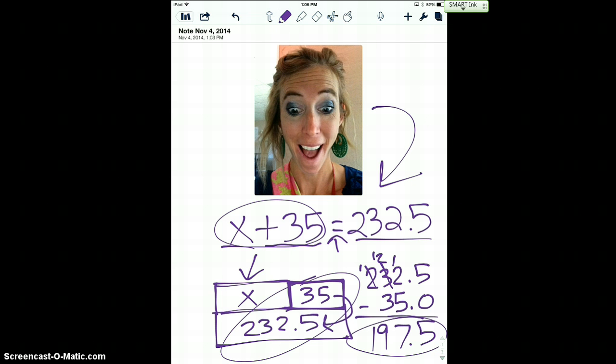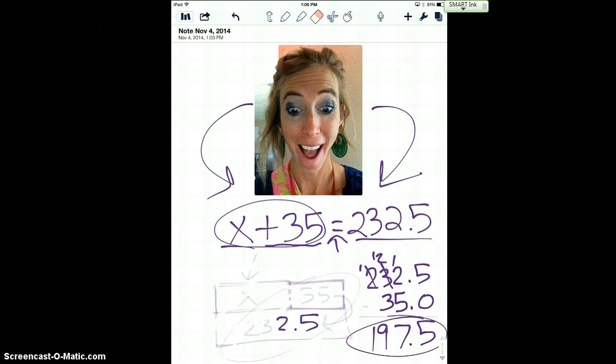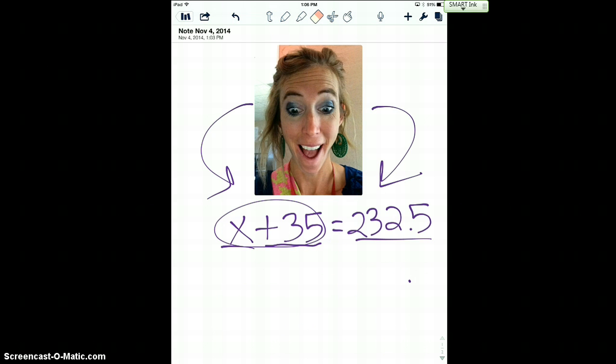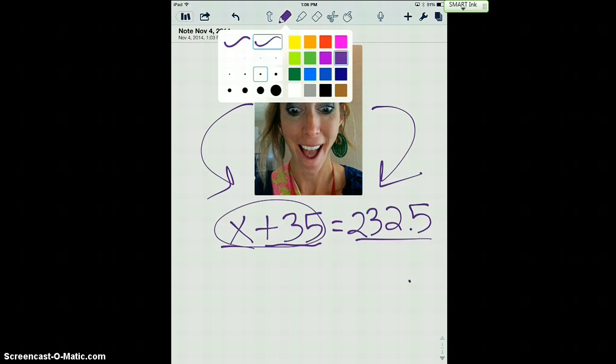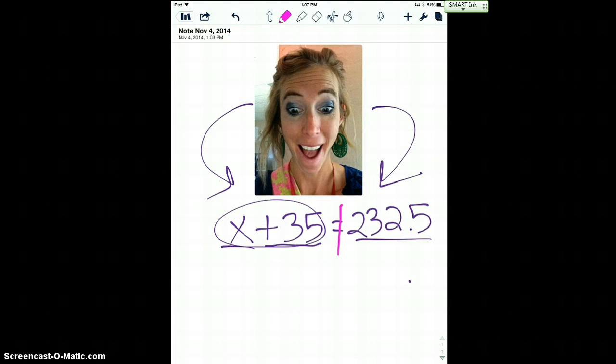Alright, now I'm gonna take that same equation that I am so excited about and I am going to solve it instead of using a picture. I'm gonna get that same answer using algebra. Alright, so the first step using algebra, I'm gonna draw in my line. I'm thinking of that scale. On one side of the scale, I have x plus 35. And on the other side of the scale, I have 232.5.